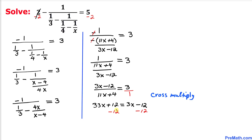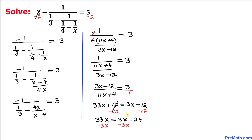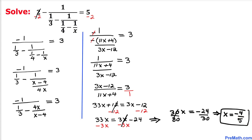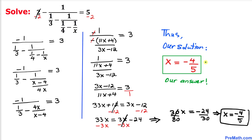Subtracting 12 from both sides gives 33x equals 3x minus 24. Subtracting 3x from both sides gives 30x equals negative 24. Dividing both sides by 30 to isolate x, and reducing, we get x equals negative 4 over 5. So our solution is x equals negative 4 fifths. Thanks for watching and please don't forget to subscribe to my channel for more exciting videos.